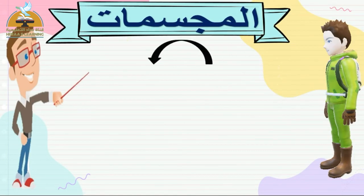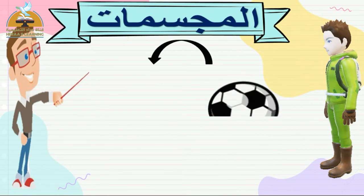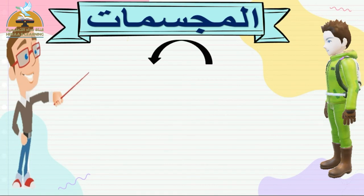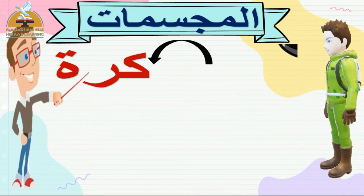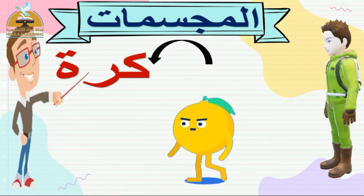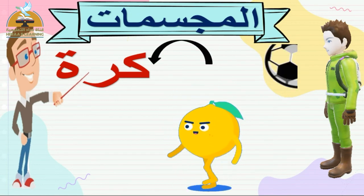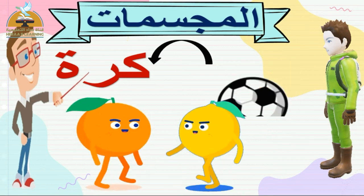لسه مكملين درسنا. المجسم الأخير وهو الكرة - اللي كلنا بنحبها ونلعب بيها. خد بالك إن فيه فرق بين الكرة وبين الدائرة: الدائرة تعتبر شكل ثنائي الأبعاد، لكن الكرة هي من المجسمات ثلاثية الأبعاد. الكرة زي ايه؟ زي البرتقالة وزي الليمون.